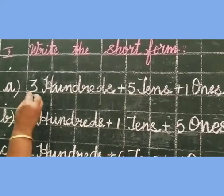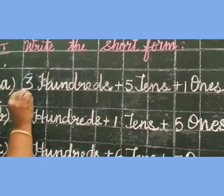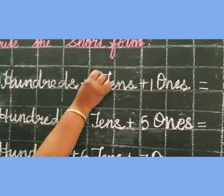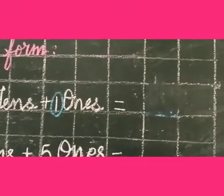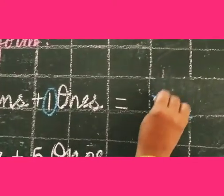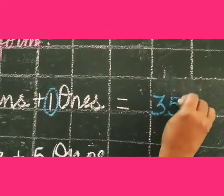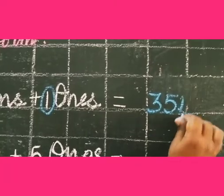First, I am going to circle the numbers: 3, 5, and 1. Just these numbers. 3, 5, 1 equals 351.